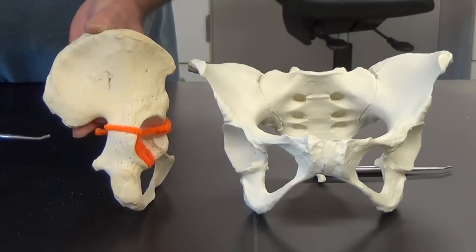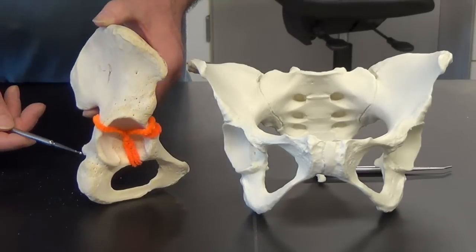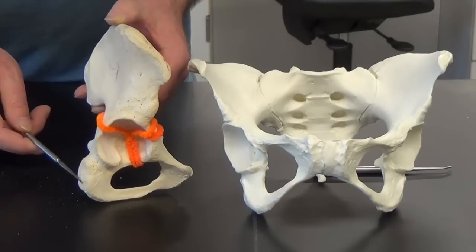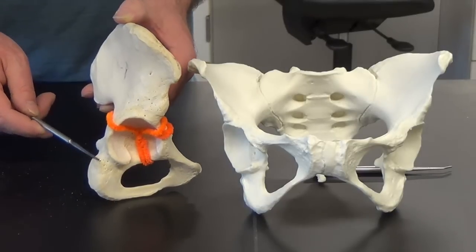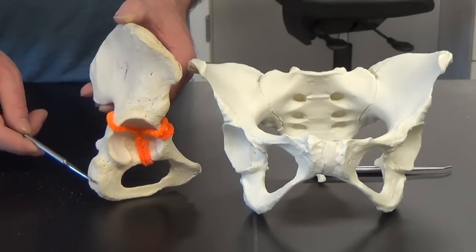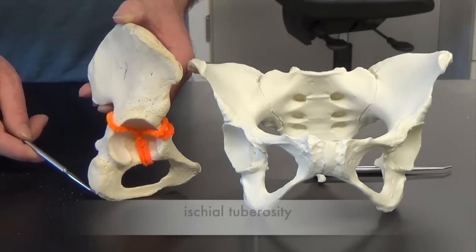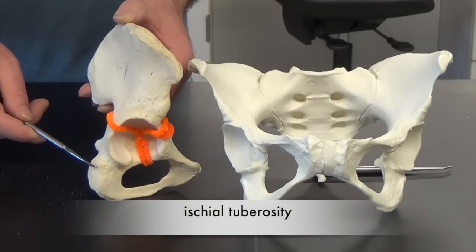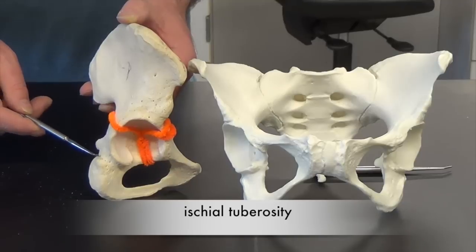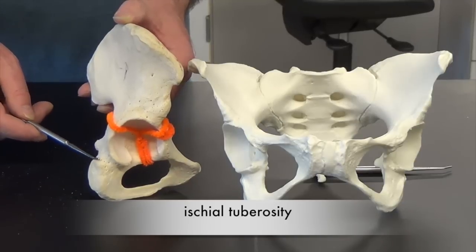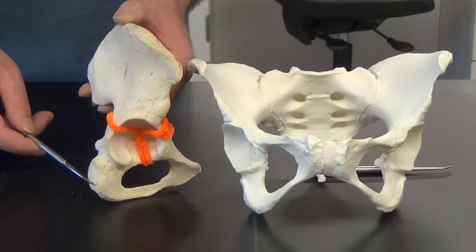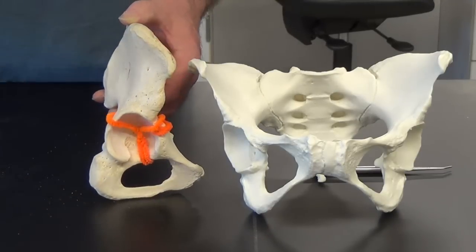This tuberosity here is called the ischial tuberosity, and this is where the hamstring muscles originate from.